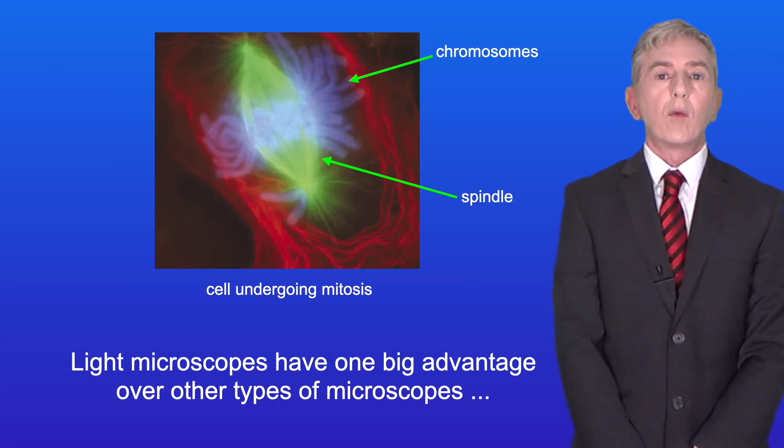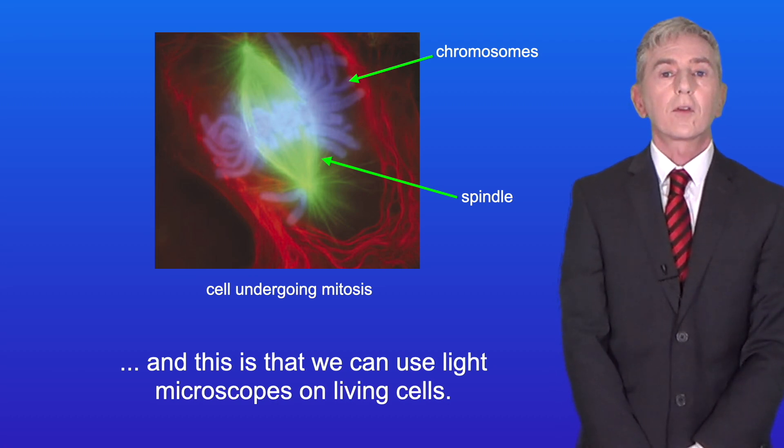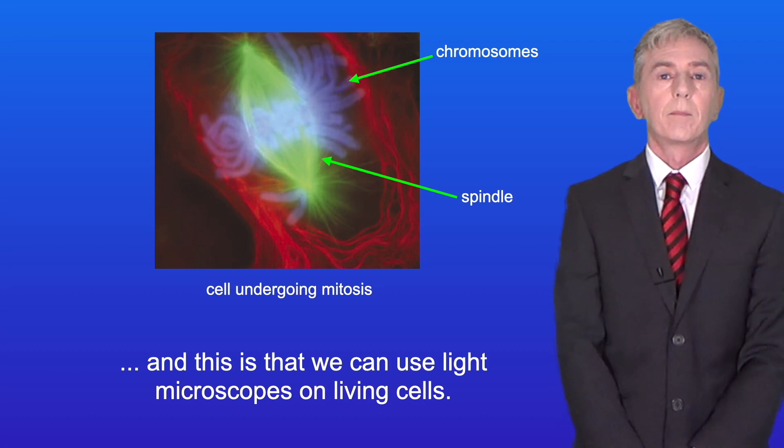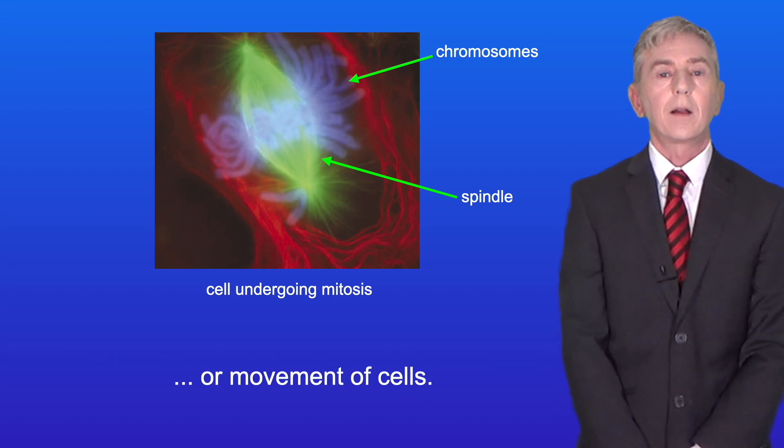Light microscopes have one big advantage over other types of microscopes and this is that we can use light microscopes on living cells. This means that we can explore processes such as cell division or movement of cells.